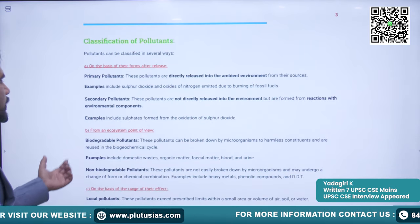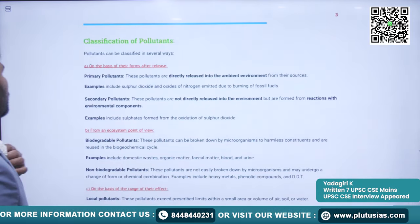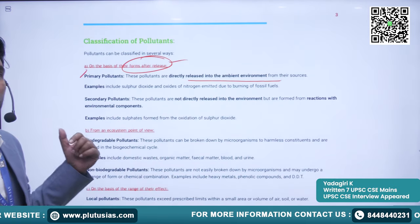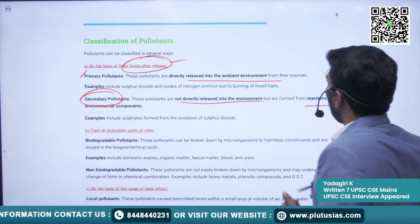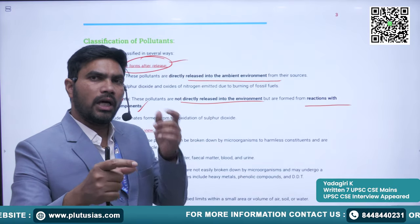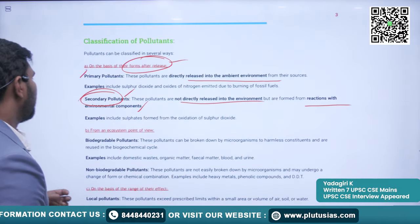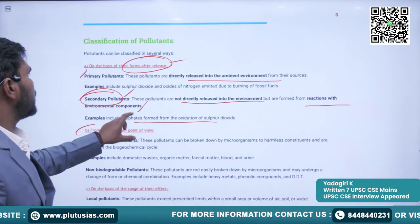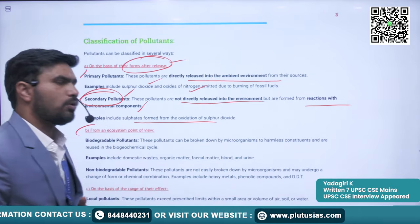Classification of pollutants: based on forms after release, they can be primary pollutants — directly released into the environment from their sources — or secondary pollutants, which are not directly released but are formed through reactions with environmental components. Examples: sulfur dioxide and oxides of nitrogen emitted from burning fossil fuels are primary pollutants; sulfates formed from oxidation of sulfur dioxide are secondary pollutants.